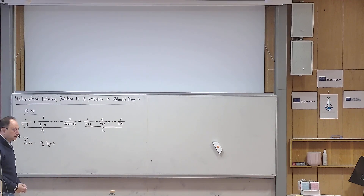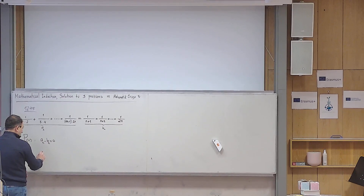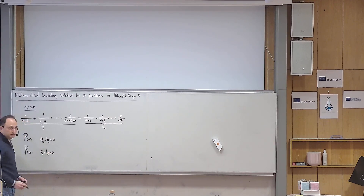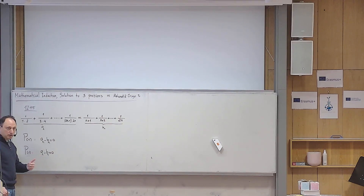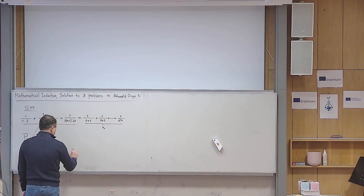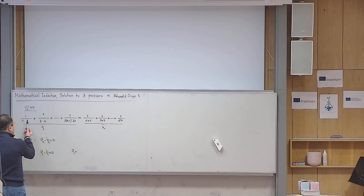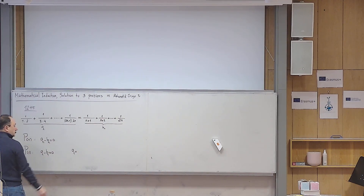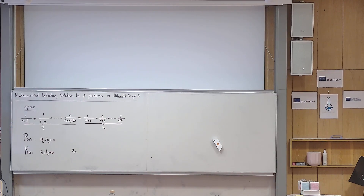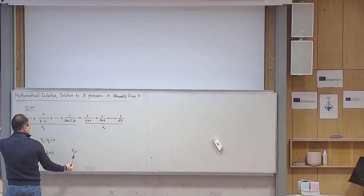The first thing I need to check is P(1). P(1) means a_1 − b_1 = 0 — it might be true or might be false, so I have to check. In order to do that I need to know a_1 and b_1. I don't think you will face any problems with a_1. a_n means you start from 1/(1·2) and continue this pattern until you hit the last term. Now n is given to be 1, so what is a_1?